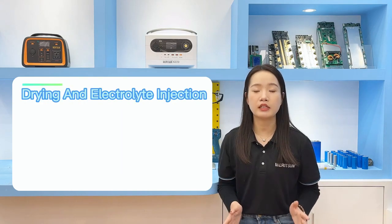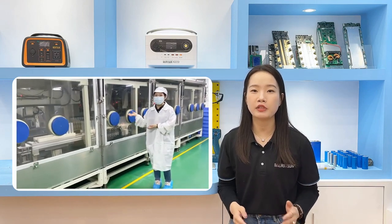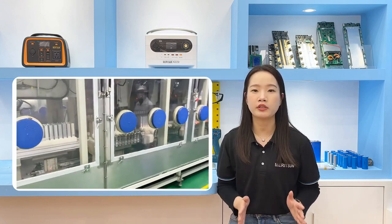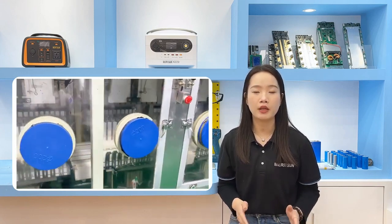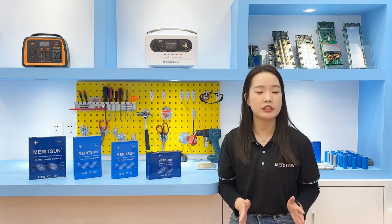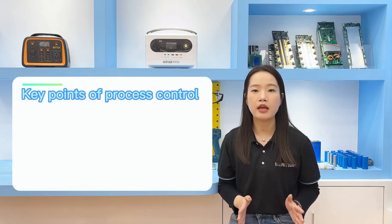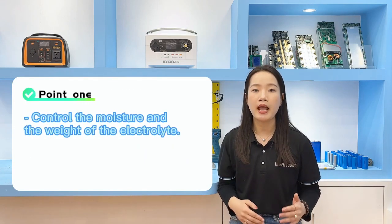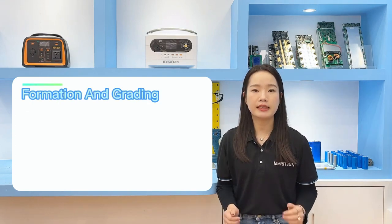The fifth process is drying and electrolyte injection. This process is carried out in a drying room because moisture will cause the electrolyte to decompose and release toxic gases. The electrolyte material is lithium hexafluorophosphate. The most important quality control points are to control moisture and ensure the correct weight of the electrolyte.